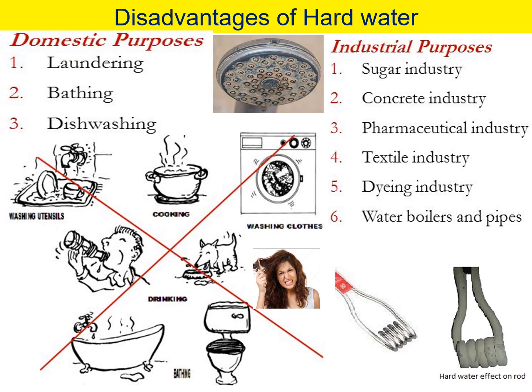For industrial purposes, industries require very specific conditions for chemical reactions. For example, in the pharmaceutical industry, if hard water is used to make tablets, the hardness-causing salts present in the water may cause side effects to the consumer. Similarly, the sugar industry, concrete industry, textile industry, dyeing industry, and thermal power plants use water boilers — the hard water creates problems there too. These will be discussed in the next sessions.